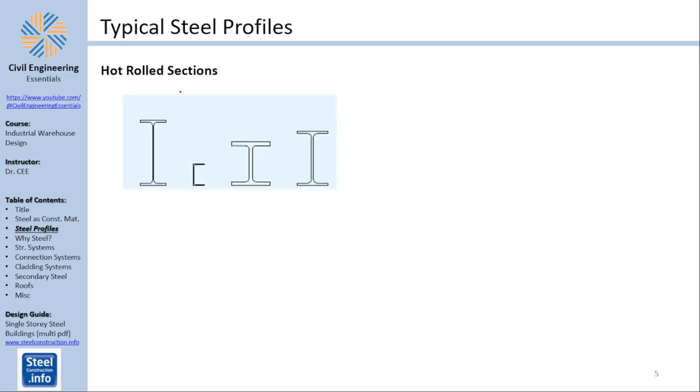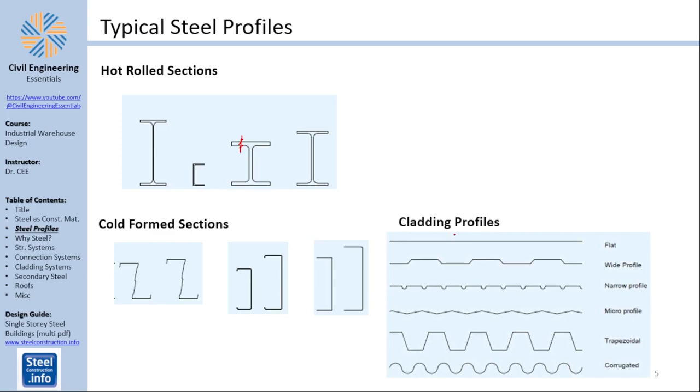Typical steel profiles are hot rolled sections and cold form sections. Hot rolled sections are done by heating up the steel and rolling them into shape as you see fit. Cold form section is basically forming the sections while the steel is not heated. For hot rolled section you can achieve higher thicknesses than what you can achieve in cold formed sections. There are also cladding profiles. Those profiles are used to have slabs and sometimes walls for steel structures.